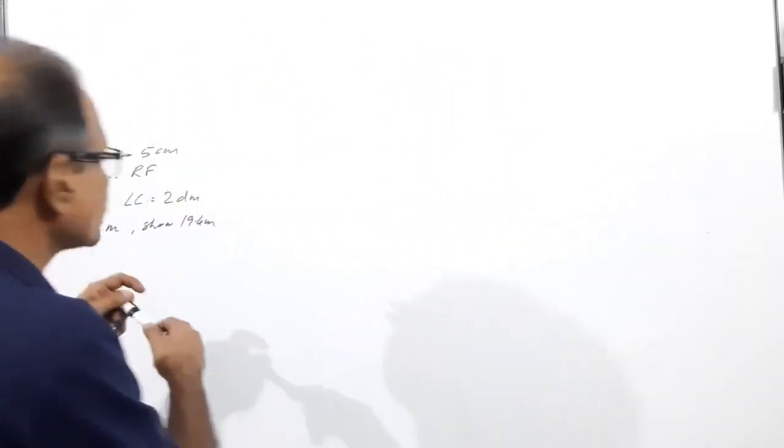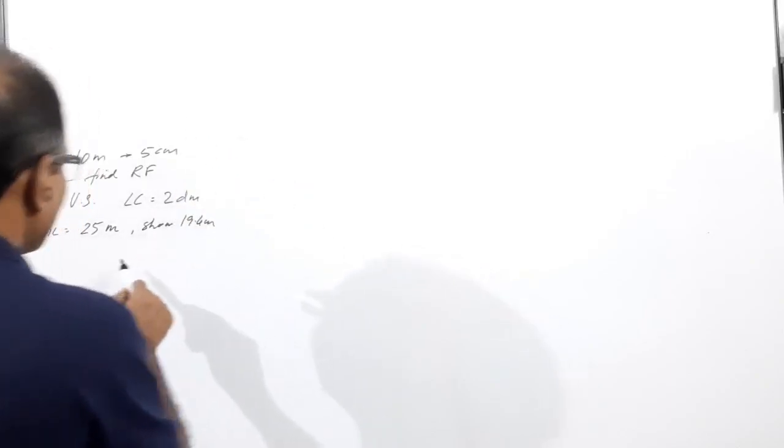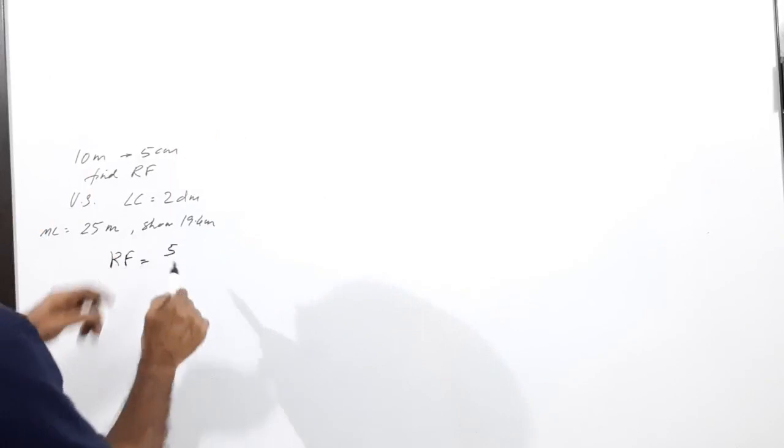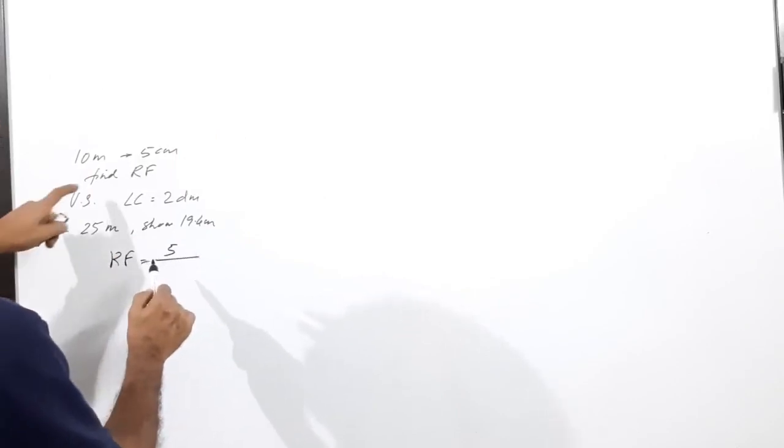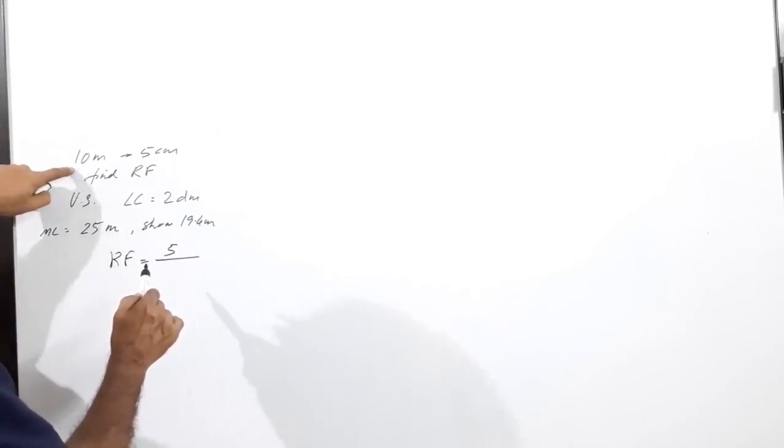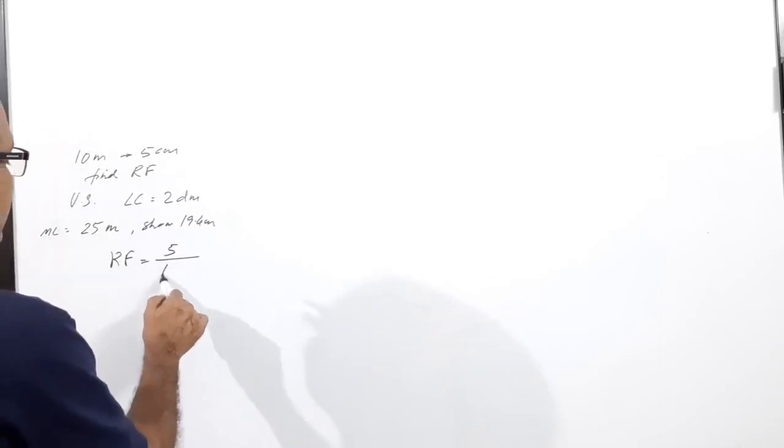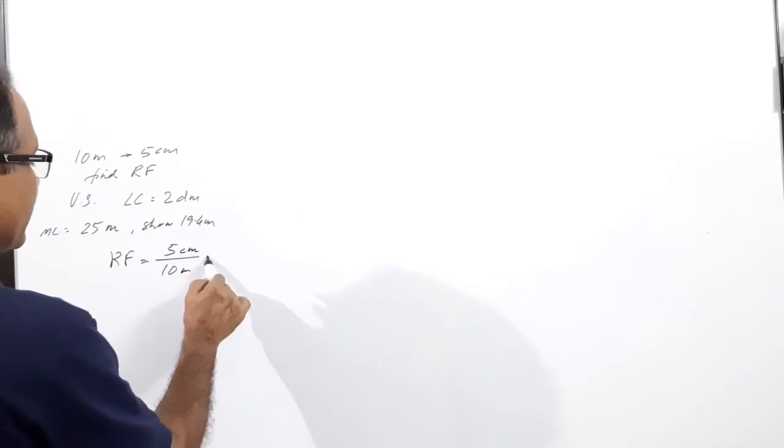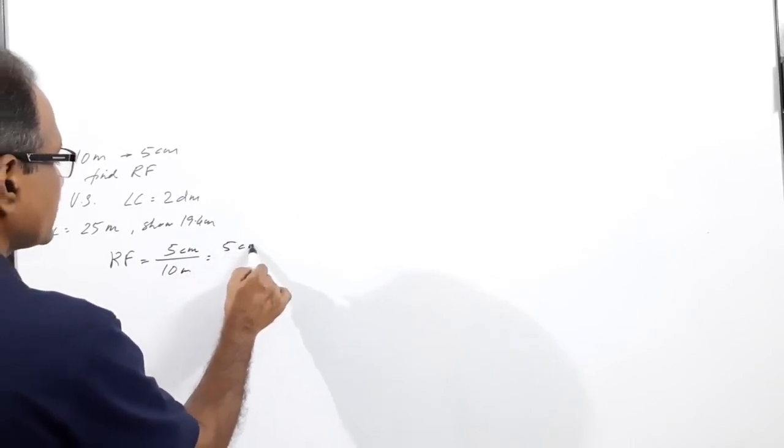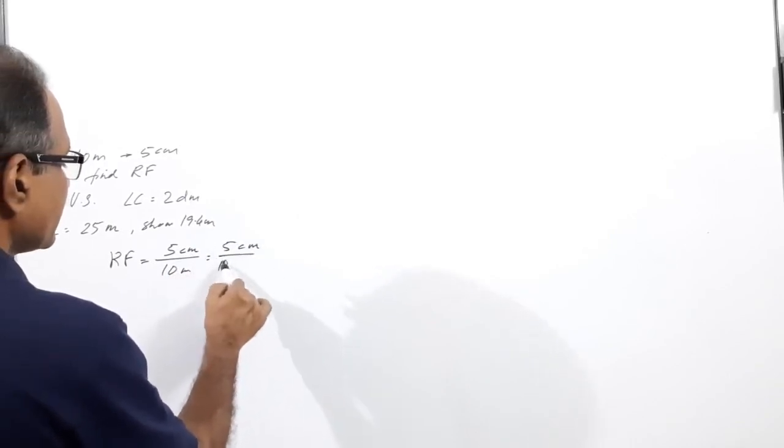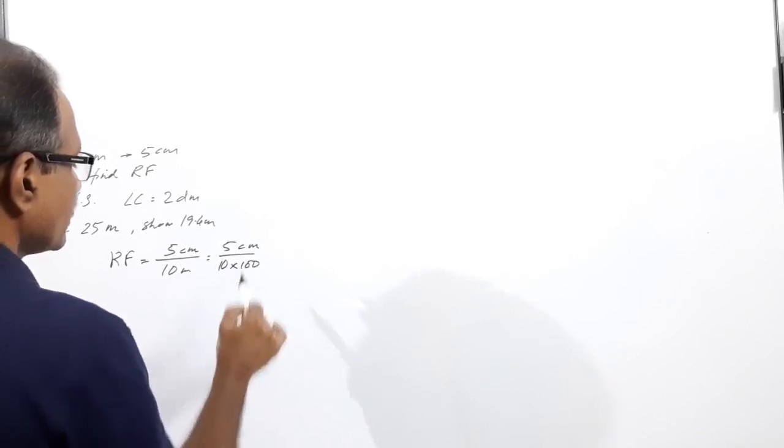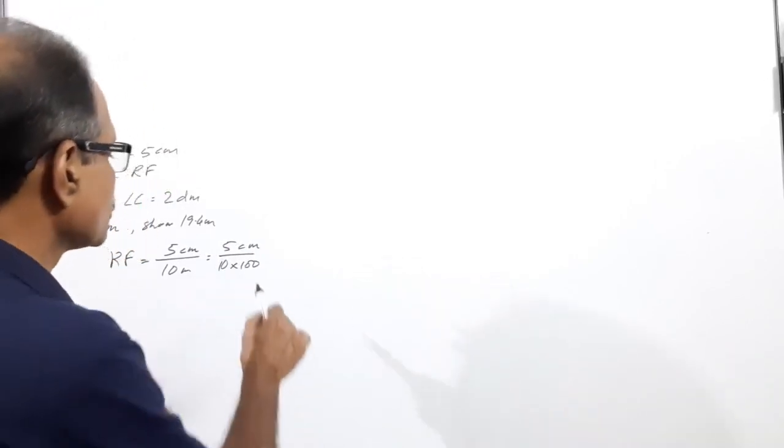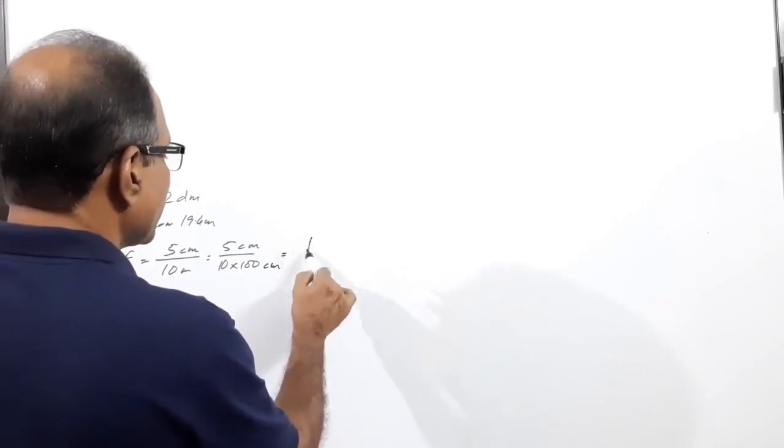Let us find the length of the scale. Before that, you define the RF. RF equals length in the drawing, that is 5 centimeters, divided by the length which it represents, which is 10 meters. 5 centimeters divided by 10 meters equals 5 centimeters divided by 1000 centimeters. Both are in the same unit, so you get 1 by 200.